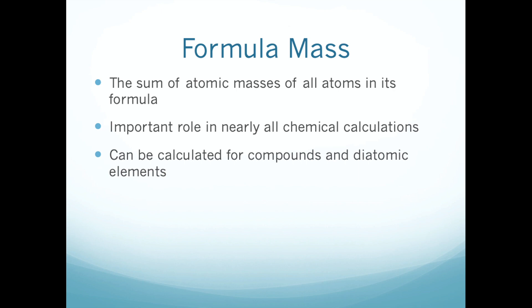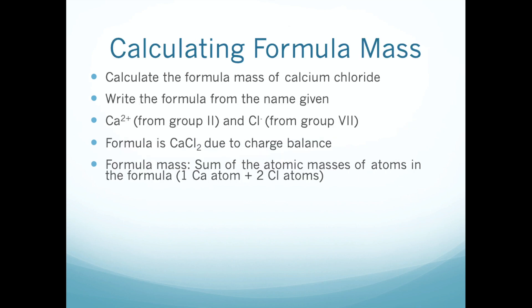So far the examples have just been elements. Keep in mind we can apply this to compounds as well. To get the mass of a formula for a compound, just add up the mass of the atoms making up that formula. For example, let's say we wanted the formula mass of calcium chloride. First, make sure you have the formula — thinking back to Chapter 5 where we talked about ionic compound formulas: calcium is a metal, chlorine is a non-metal, so it's an ionic compound. The formula must be CaCl₂, because calcium has a 2+ charge and chloride has a minus 1 charge.